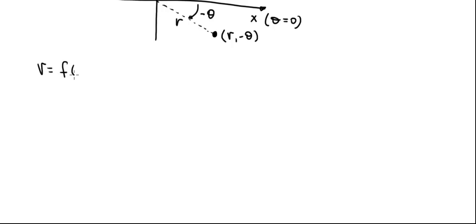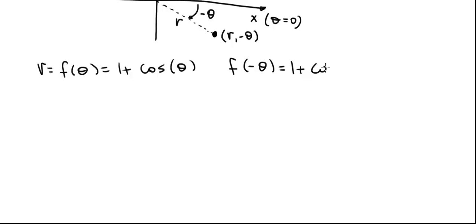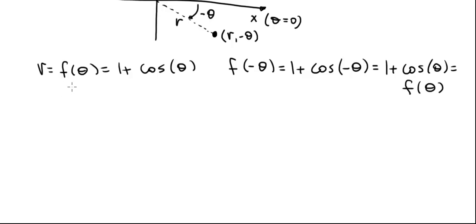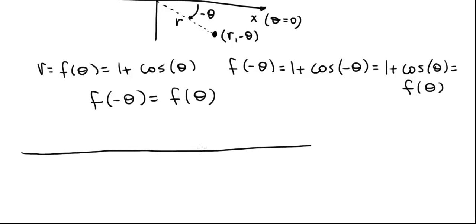For equation one, r equals f of theta equals 1 plus cosine of theta, let's test for symmetry with respect to the polar axis. We plug in minus theta for theta: f of minus theta equals 1 plus cosine of minus theta, and by the trig identity, this equals 1 plus cosine of theta, which is the original f of theta. So f of minus theta equals f of theta, and the equation is symmetric with respect to the polar axis. We only need to graph it on one side of the polar axis and get the other side by symmetry.